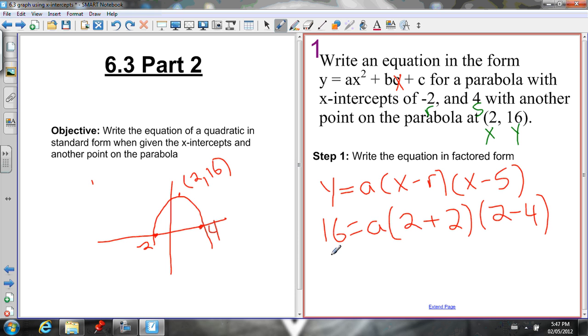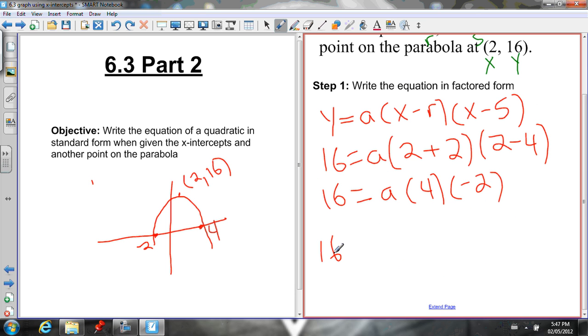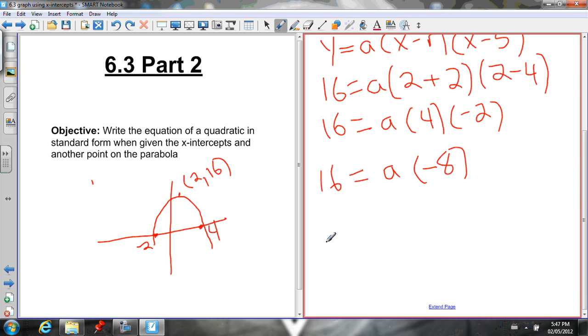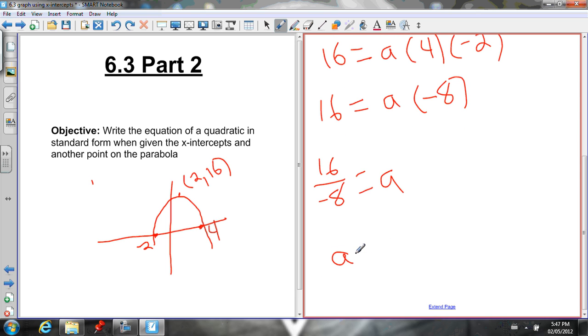Now we can solve for a, just use our basic math skills. 2 plus 2 is 4, 2 minus 4 is negative 2. 4 times negative 2 is negative 8. And then to isolate a, we're going to have to divide the negative 8 to the other side. 16 over negative 8 equals a. That means our a value is negative 2.